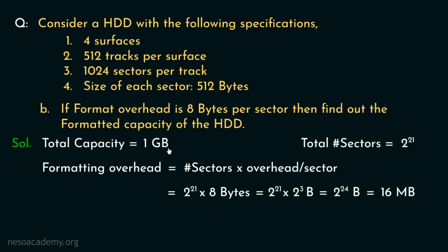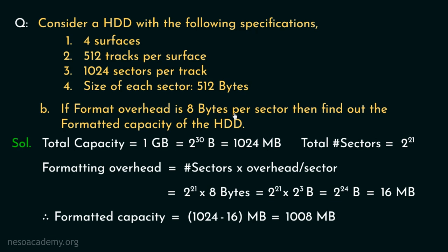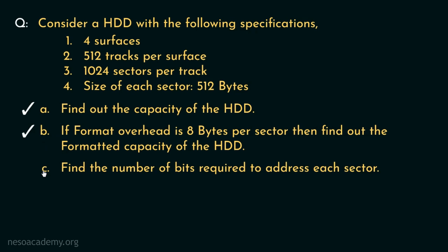We calculated the total capacity as 1 GB, which is 2³⁰ bytes. This can be stated as 2¹⁰ × 2²⁰, where 2²⁰ gives us the unit megabytes and 2¹⁰ is 1024. Hence the total capacity in megabytes is 1024. Therefore, the formatted capacity is the total capacity minus the formatting overhead: 1024 MB − 16 MB = 1008 megabytes. So although the total capacity of the disk is 1 gigabyte, due to 8 bytes of format overhead per sector we will be able to access only 1008 megabytes.